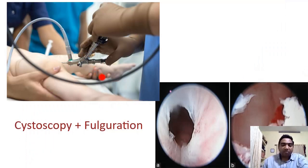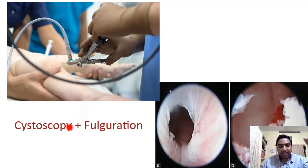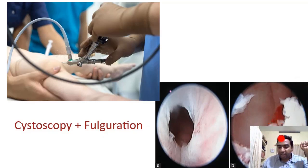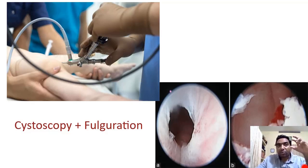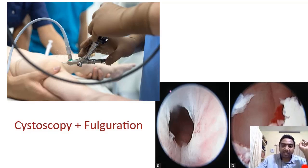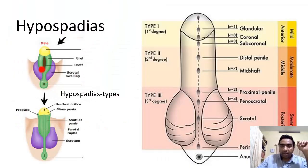Treatment of posterior urethral valve is by cystoscopy and fulguration. Under cystoscopy we can see the posterior urethral valve and once we fulgurate it, the valve is disrupted and the opening is enlarged. However, the problem in the urethra being resolved does not mean the problems in the ureters and kidneys are over — the patient can still develop chronic renal failure, which must be managed. PUV is not just an anatomical obstruction; it has significant functional consequences for the kidneys and ureters.